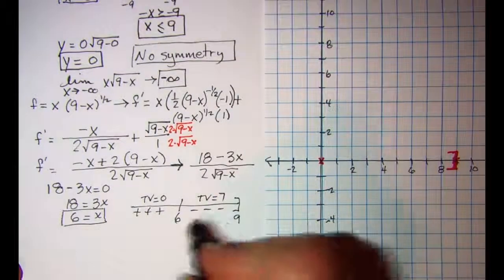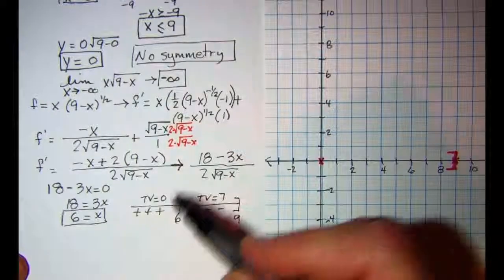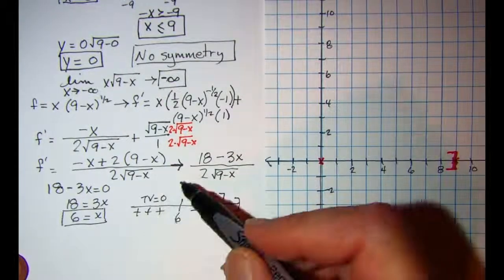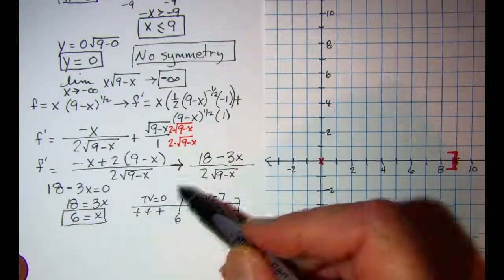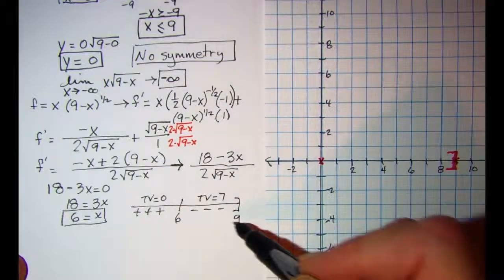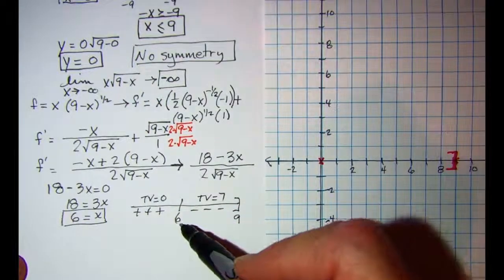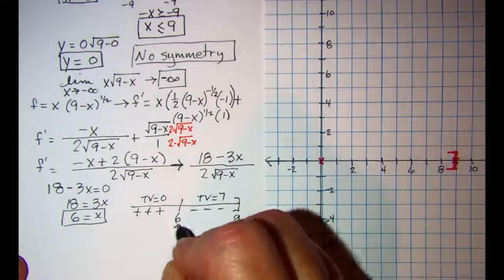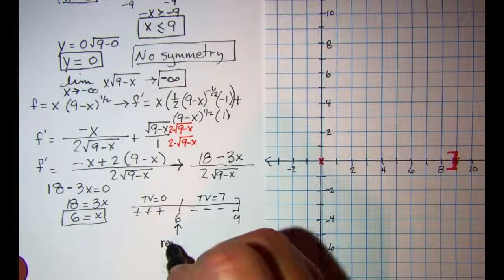So it looks like since my derivative is positive, slope of the tangent line is positive, and then negative on either side of the 6, that my 6 is a relative max.